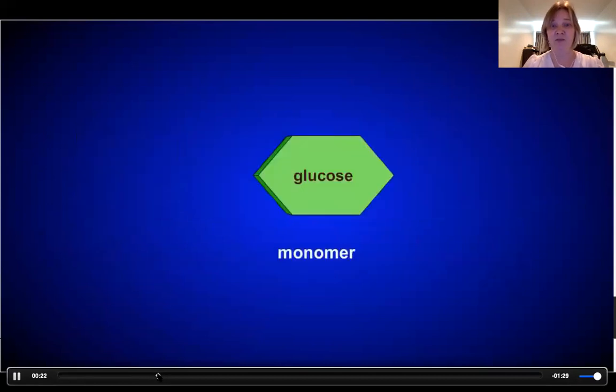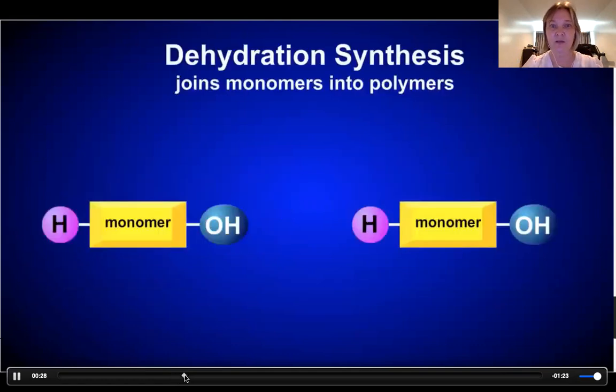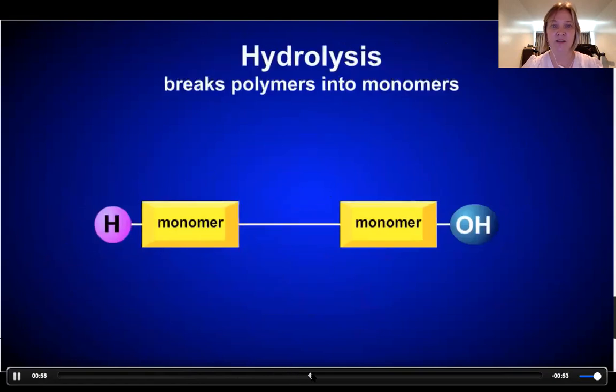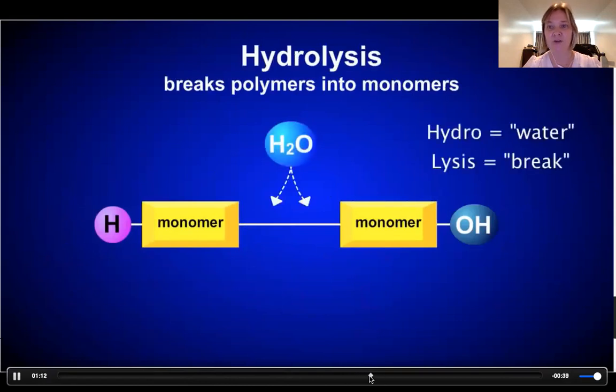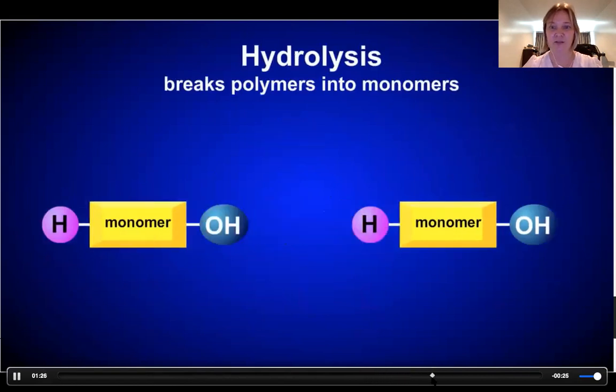For carbohydrates, the monomer is glucose. I'm going to go over all of this when I talk about each type of molecule specifically. But just to let you know how this works: for carbohydrates, the monomer is glucose. Here it's going to show you, you take the hydrogen on one side and the hydroxyl group, and you form a bond there. And then when you want to break them down, you just add them back in. Hydro, water; lysis, break. And you're going to just put them back. So now you have two separate monomers again.